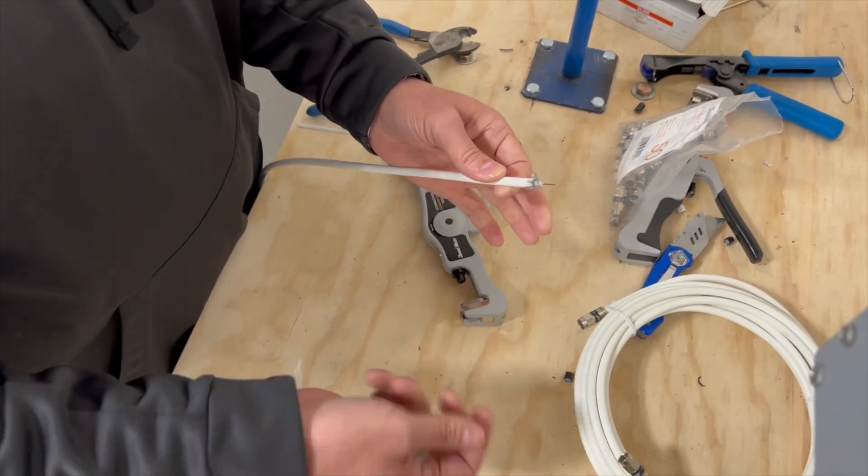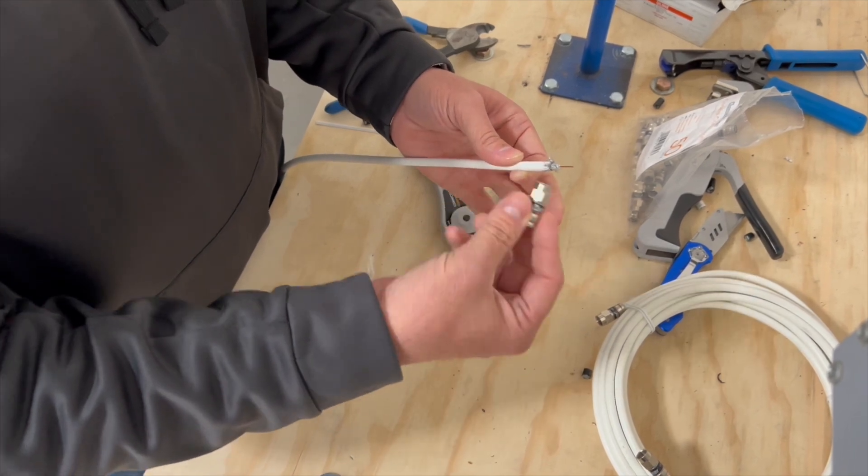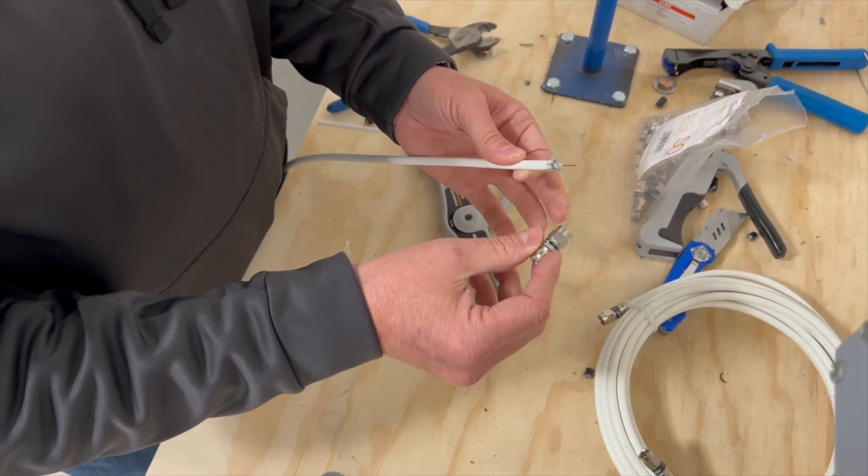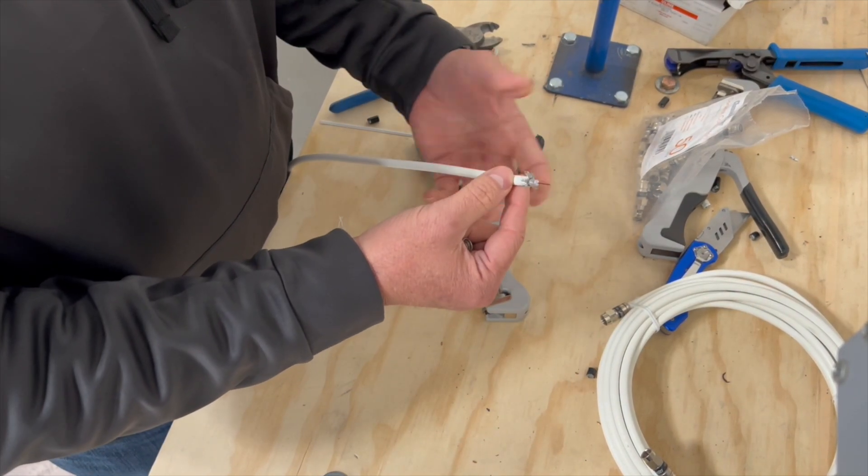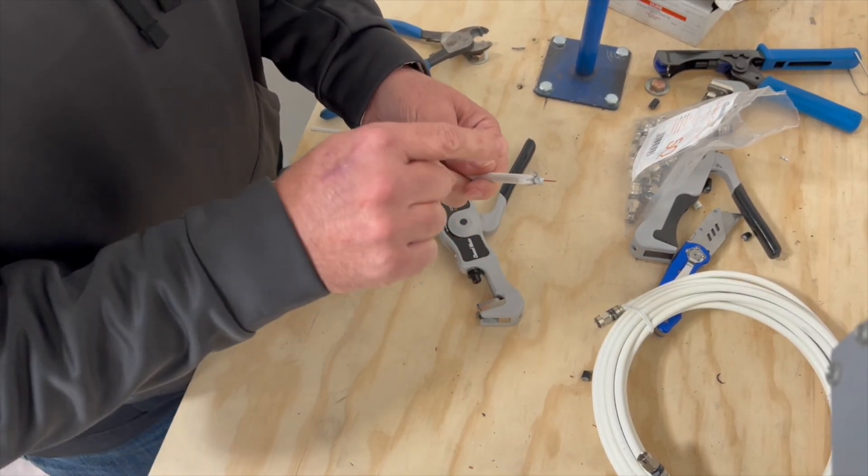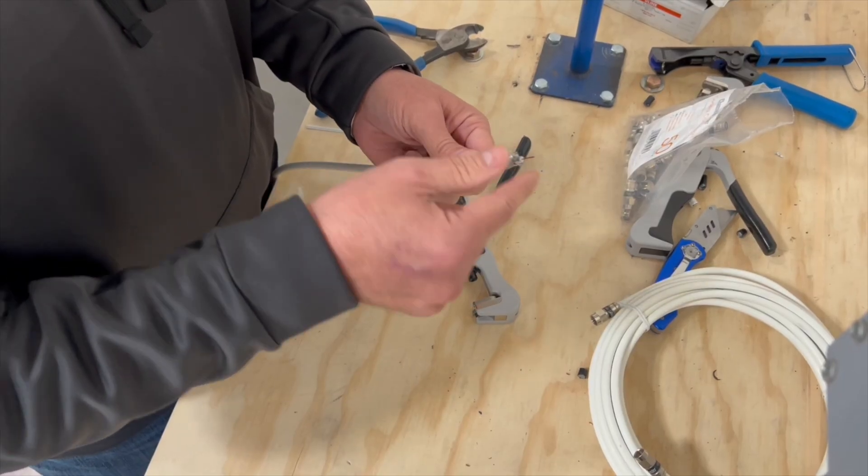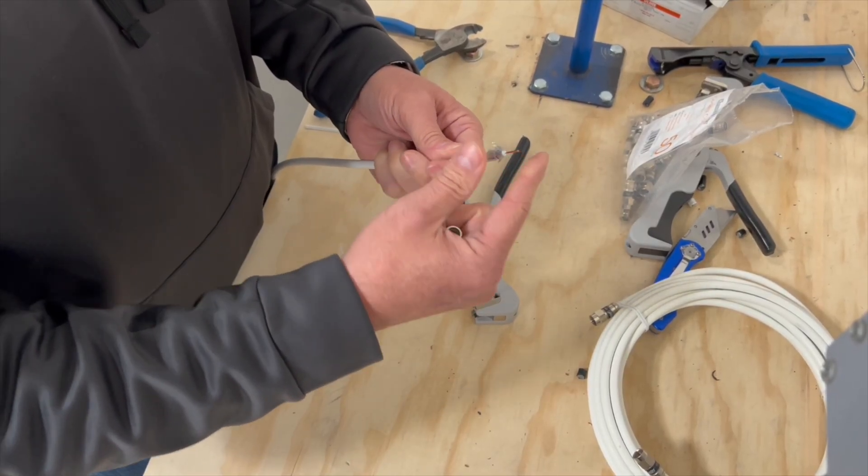Now as you get up to quad shield cable, it'll become harder to put on the connector because the jacket and everything gets a little bit wider and thicker. So that's when it's going to become really critical. If you're preparing quad shield cable, you need to make sure that you get all the braids pulled back to make it easier on your connector insertion.